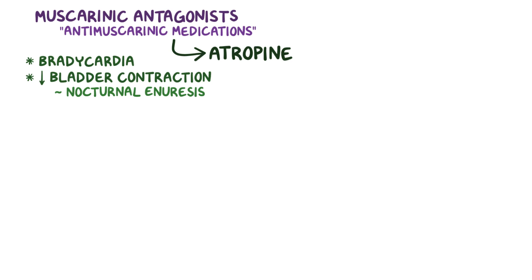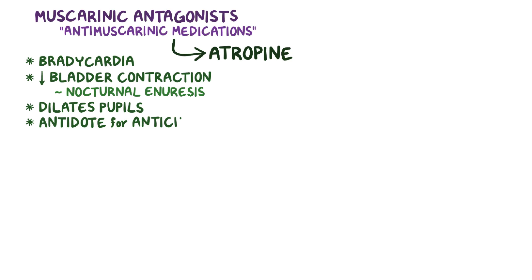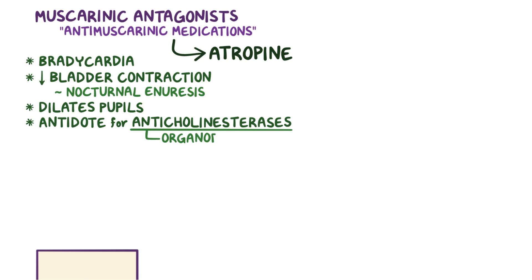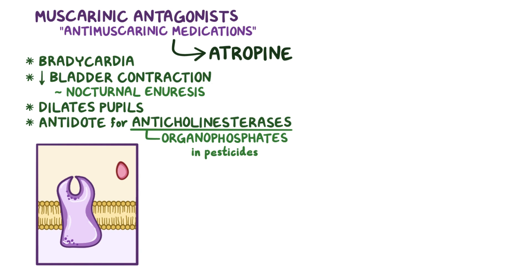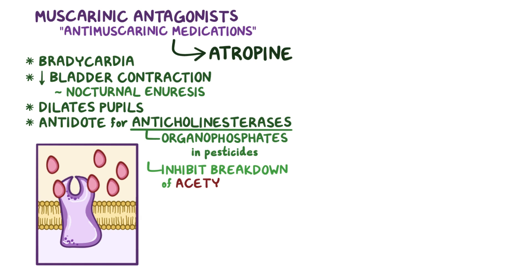Ophthalmologists can also use atropine to dilate the pupils. It is also an antidote for poisoning by acetylcholinesterase inhibitors like organophosphates found in pesticides. These agents prolong the effect of acetylcholine by inhibiting their breakdown, so atropine can help simply by blocking the muscarinic receptors.